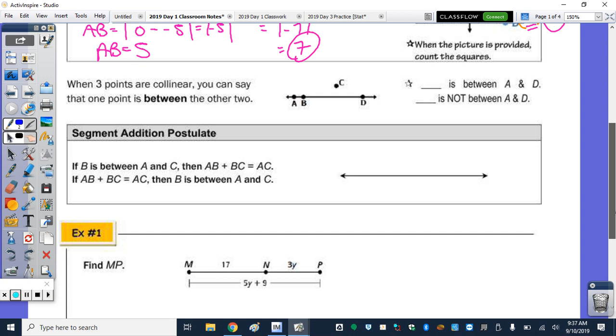Below, before the segment addition postulate, it says that when three points are collinear, you can say that one point is between the other. So to the right, a, b, and d are collinear. a, b, and c are not. So we can say that b is between a and d, where c is not. They have to be collinear.